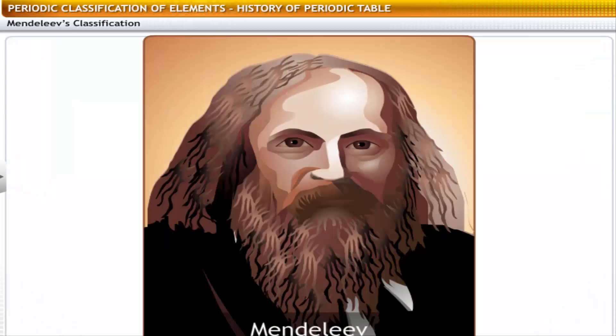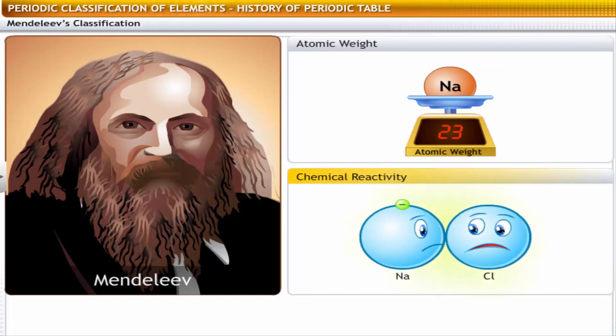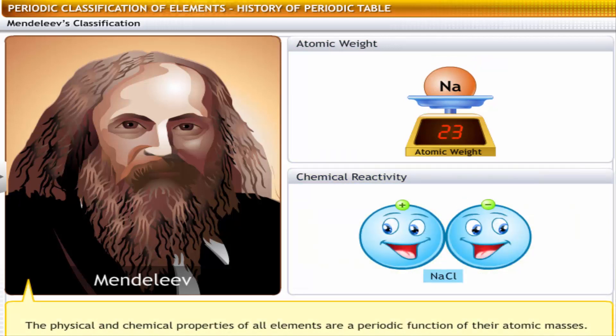Mendeleev based his work on the research by Newlands and took it further. He felt that effective grouping of elements and prediction of properties could be based on two parameters, atomic weight and chemical reactivity. Mendeleev's periodic law states that the physical and chemical properties of all elements are a periodic function of their atomic masses.